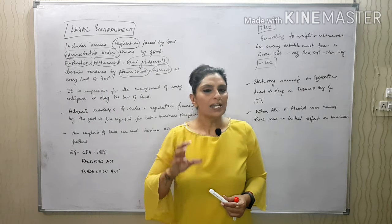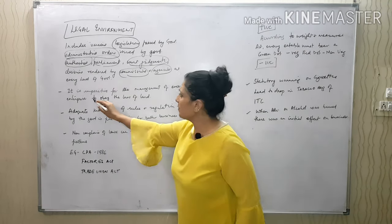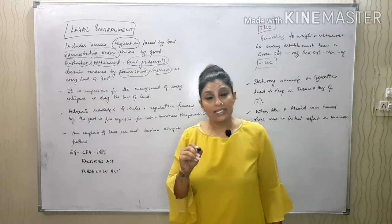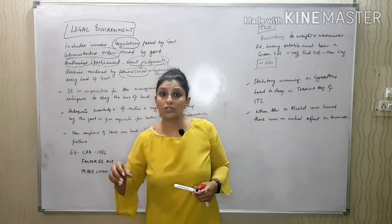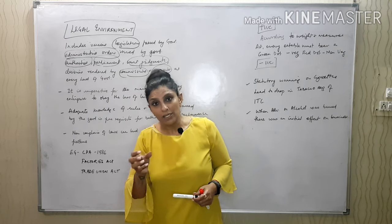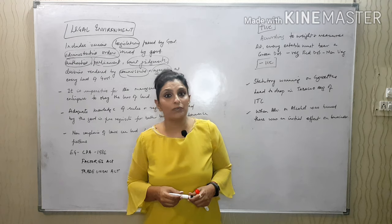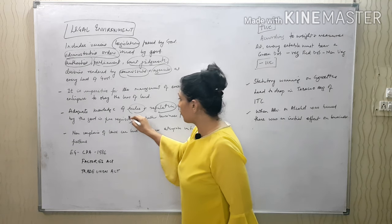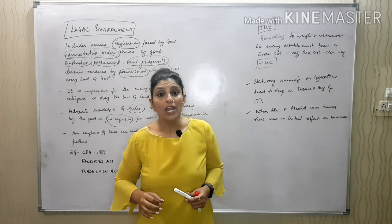Any law or legislation passed by the judiciary and legal authorities immediately becomes an act or a full-fledged judgment. It is imperative for the management of every enterprise to obey the law. For example, veg food must have a green dot and non-veg must have a red dot — it is very important. If there is any change in flavor or any non-vegetarian ingredient comes into a vegetarian product, companies have to pay compensation.